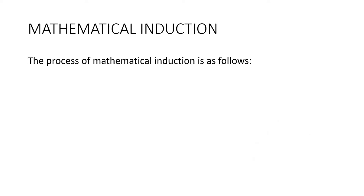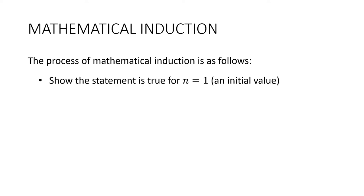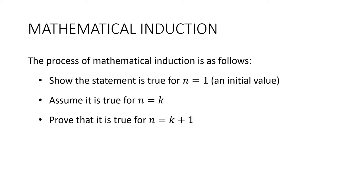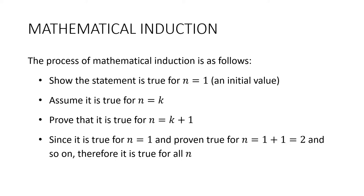Recall, the process of mathematical induction is as follows. We need to show that the statement is true for n equals 1, or some initial value. Then we assume that it's true for an arbitrary value k. Given that assumption, we then prove that it is true for n equals k plus 1. And then, since it is true for n equals 1 and proven true for n equals 2 and so on, it must be true for all n.